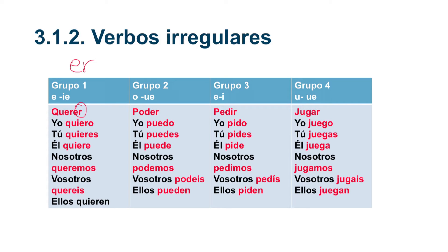The endings are: yo quiero, tú quieres. But why, if this is an 'e', does it change to 'ie'? Because it's a stem-changing verb — you change it to quiero, quieres. But pay attention to nosotros and vosotros: they do not change the stem.